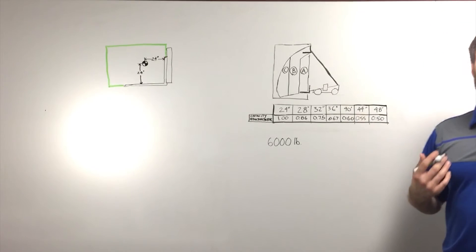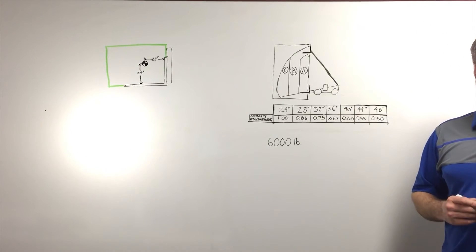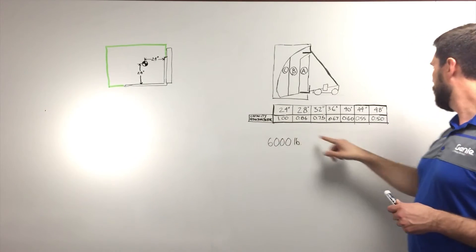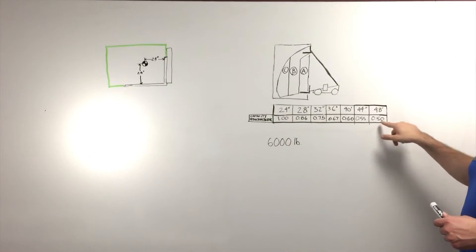I also know that the load center of the load I need to place is at 48 inches. So I look in my table for capacity reduction factor at 48 inches is 0.50.